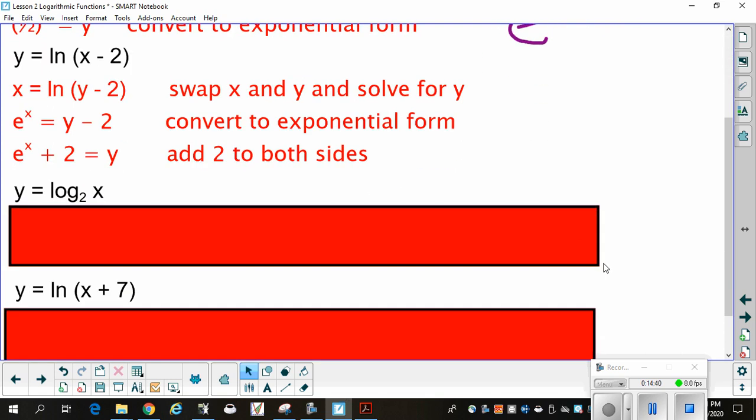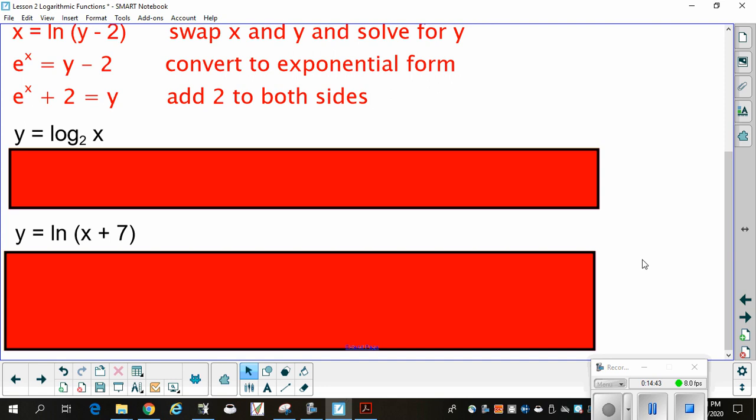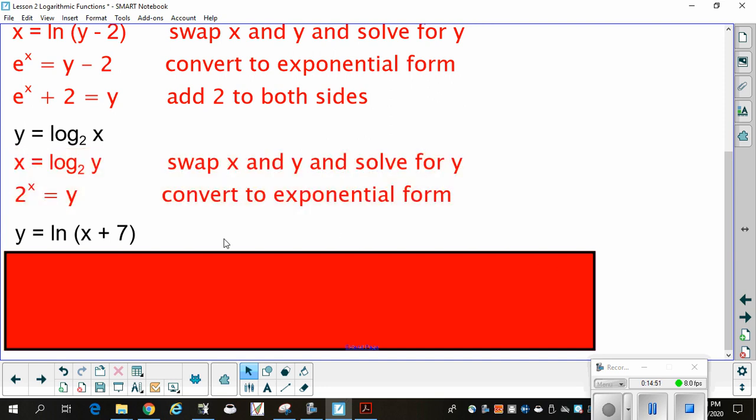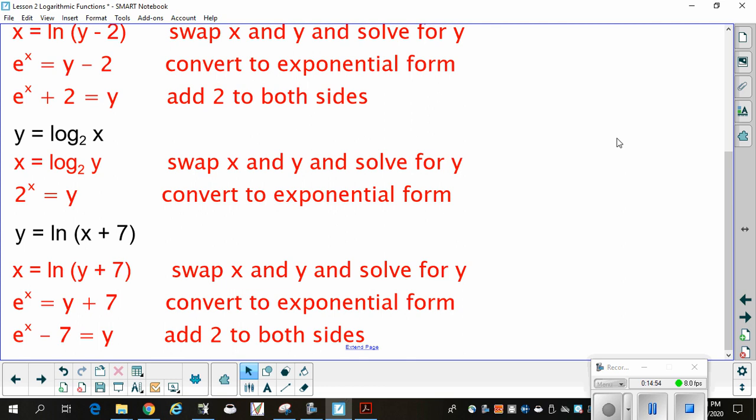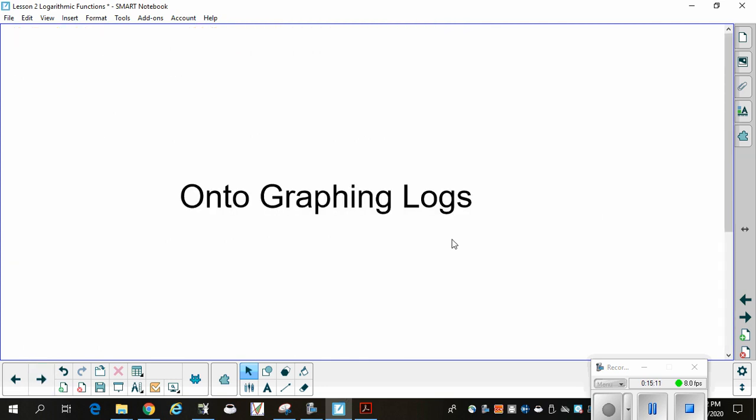Since we did those two, these next two are similar to the first two. Pause the video and try these. Did you get 2 to the x equals y? And e to the x minus 7 is equal to y? If you need to, pause the video. Steps are the same. Swap x and y and then convert. You do the push-up and then you add or subtract if you have something else left over. Excellent. At this point, I'm going to stop this part of the video so that you can take a break. And when you come back, watch lesson 2b, graphing logs. Thanks.